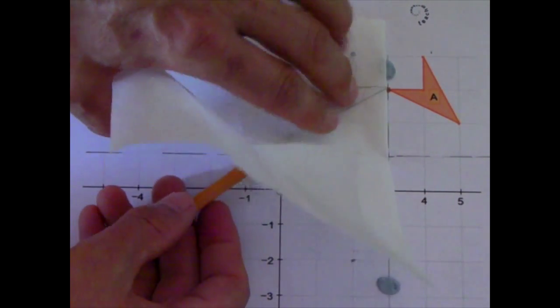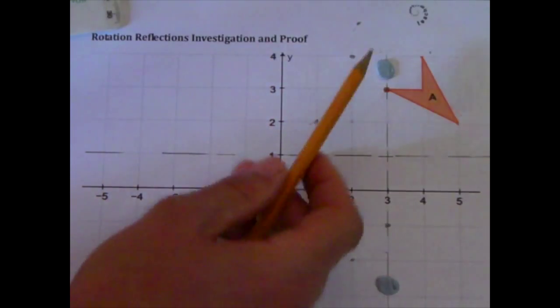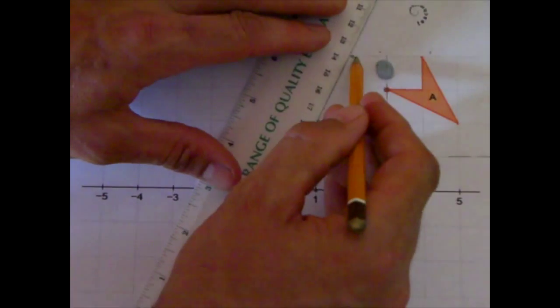So I'm just going to slide my pencil underneath, and I can see where each of those points should be. You can see through the tracing paper. When they've marked, draw in the shape. That's the image.